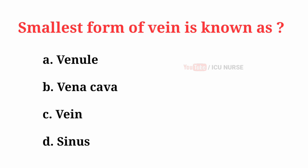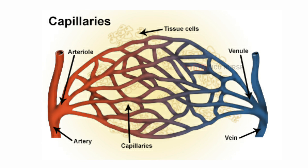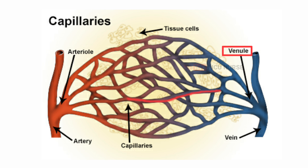Smallest form of vein is known as — the correct answer is A: Venule. A venule is a very small blood vessel in the microcirculation that allows blood to return from the capillary beds to drain into the larger blood vessels, the veins.